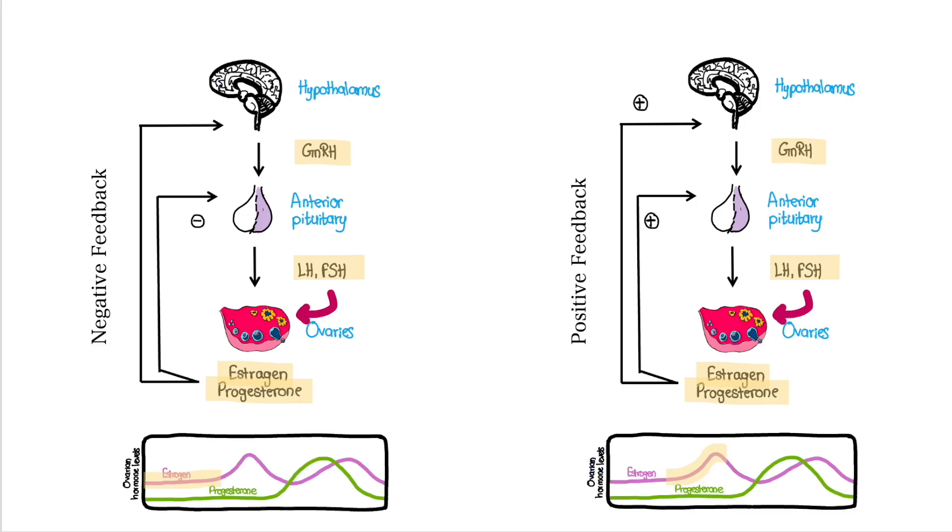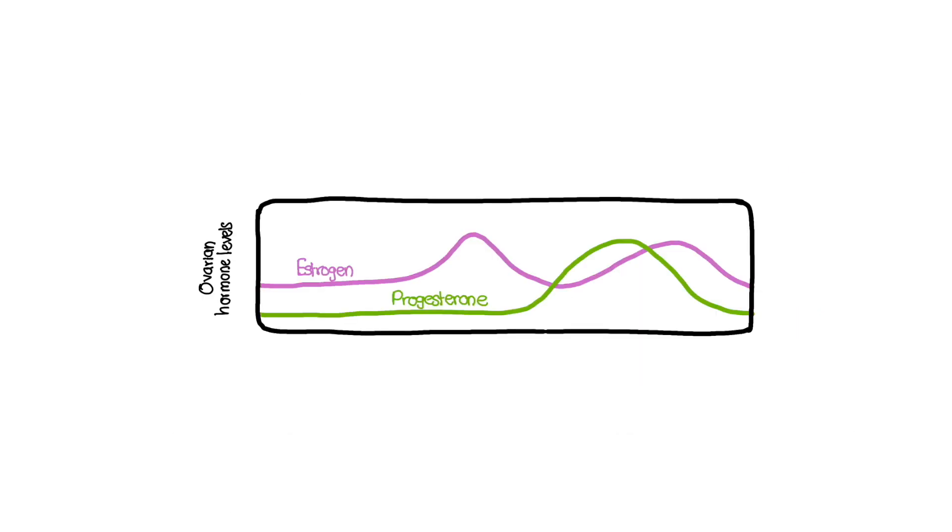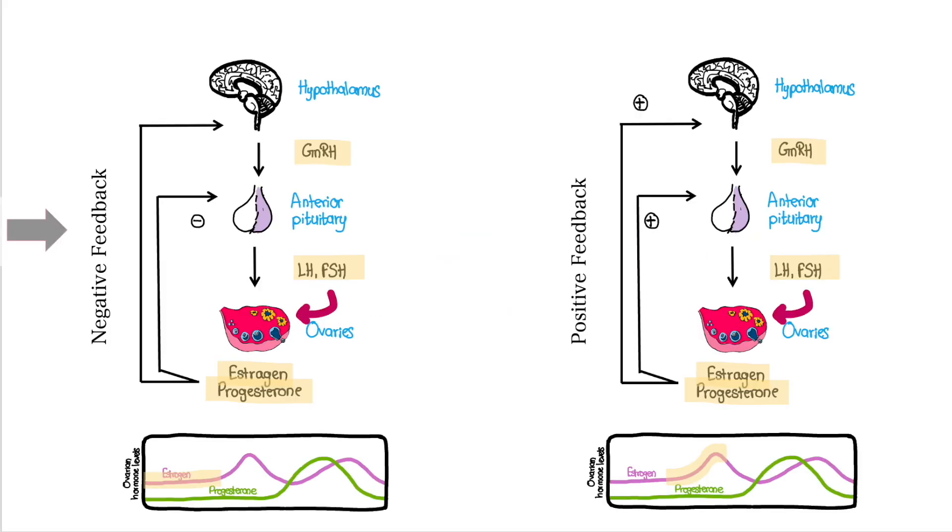When it comes to the feedback mechanism, let's consider estrogen and progesterone. Throughout the menstrual cycle, estrogen and progesterone levels fluctuate. These hormones exert negative feedback on the hypothalamus and pituitary glands. However, sometimes when certain thresholds of these hormones are met, they can also exert positive feedbacks.